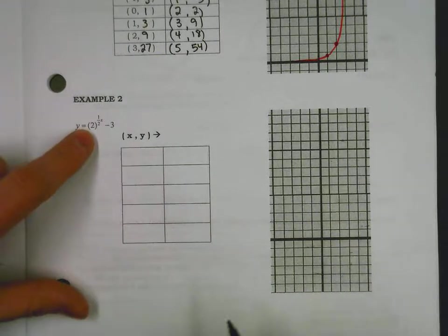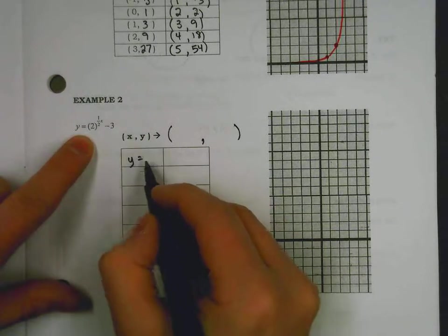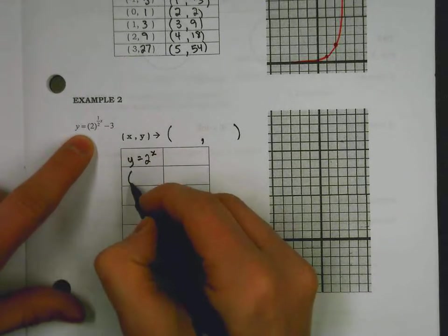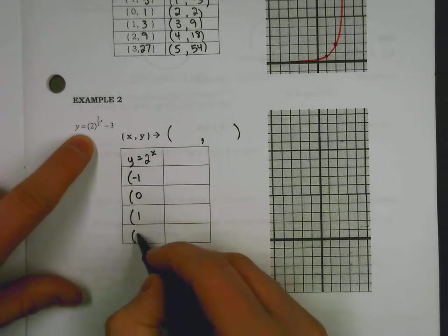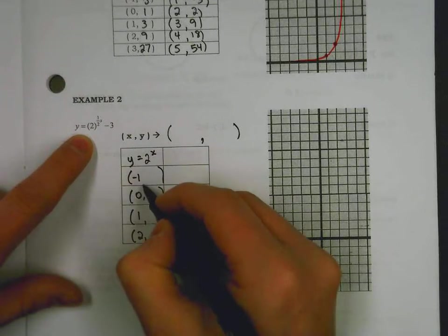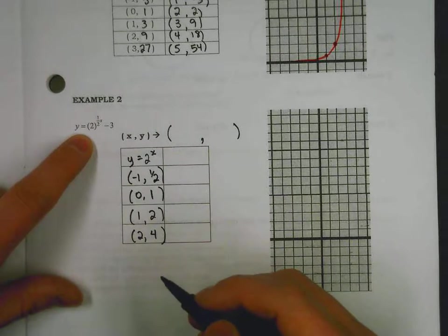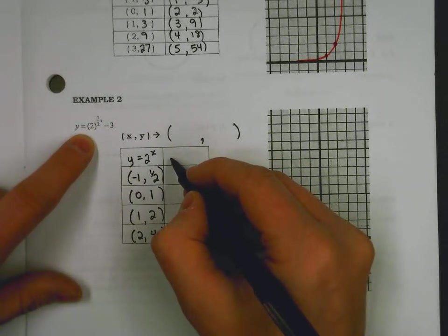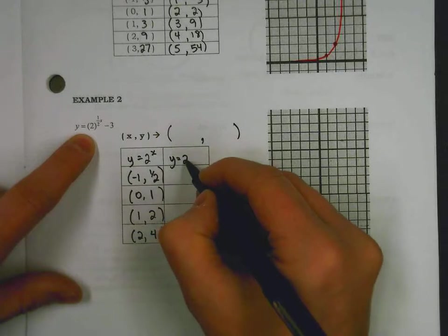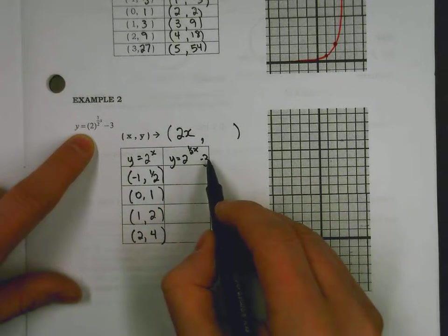One last one. Again, if you want to take a moment and pause the video and give this a try, it's a great idea. But we're going to deal with our base function. I see a base of 2. So we're going to start with a base of 2, which gives us some values. Again, I'll start with a negative 1 just because it didn't give us a ton of choice. And so if you plug in a negative 1, a 1/2 comes out. Plug in 0, 1. 1, 2. 2, 4. And maybe there's enough space, but we'll see if we can fit a 3 comma 8. So we're going to apply this transformation to see what happens to 2 to the 1/2 x minus 3. I see the x values are all being stretched by a factor of 2. Y values are all shifting down 3.